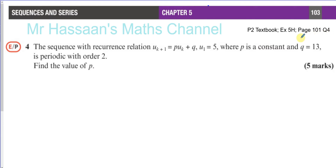The question is about a recurrence relationship and a periodic sequence. The recurrence relationship is U_{k+1} = P·U_k + Q, where U1 equals 5, P is a constant, and Q equals 13. The sequence is periodic with order 2. Find the value of P.